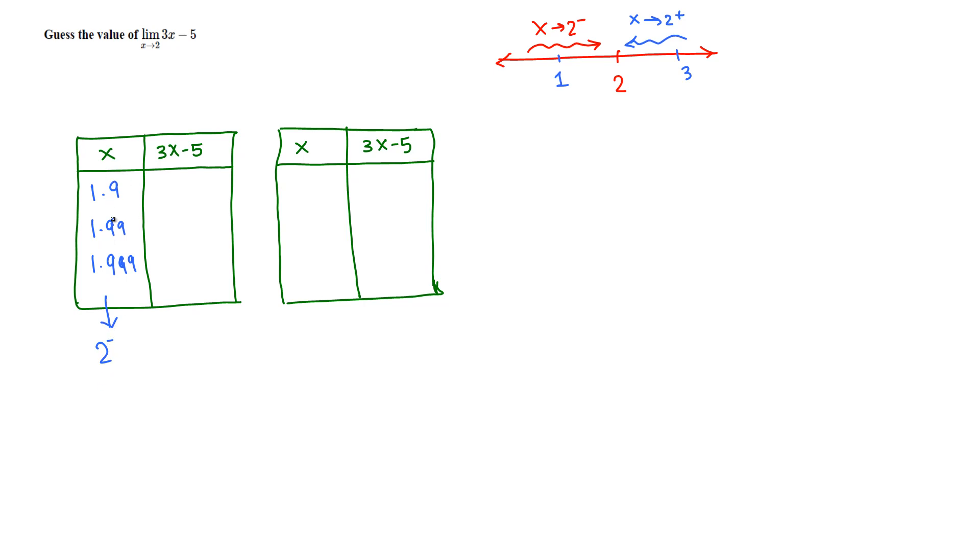Okay, plug these x values into this function 3x minus 5 and find the corresponding function values. Let me do that in the calculator. If we plug in 1.9, we get 0.7. Let's do 1.99, then we get 0.97. 1.999 gives us 0.997. Clearly these values are approaching 1, very very close to 1. They are approaching 1.